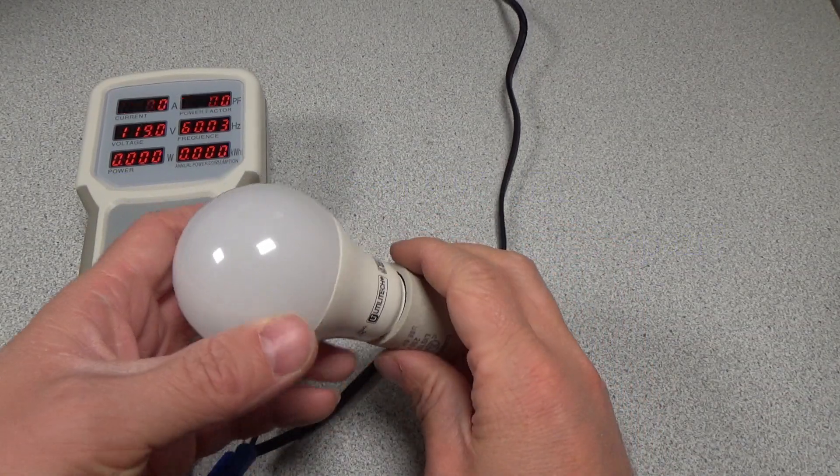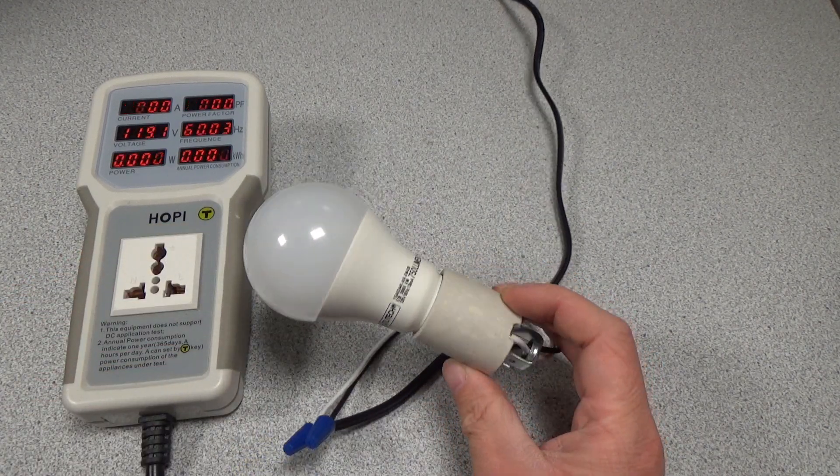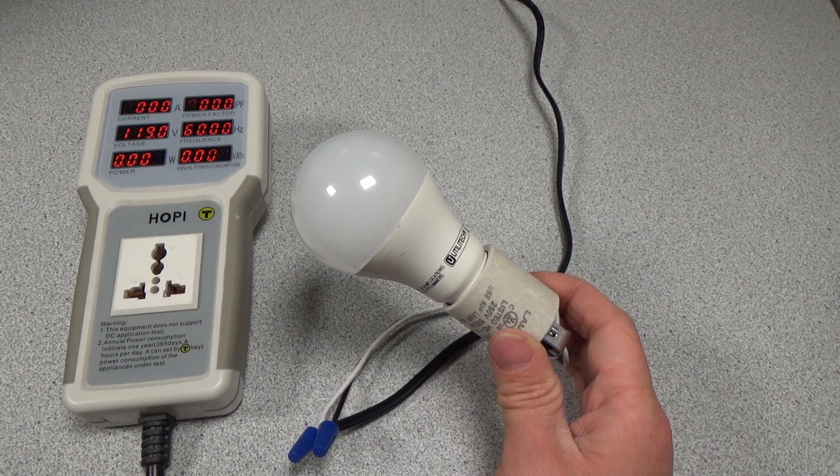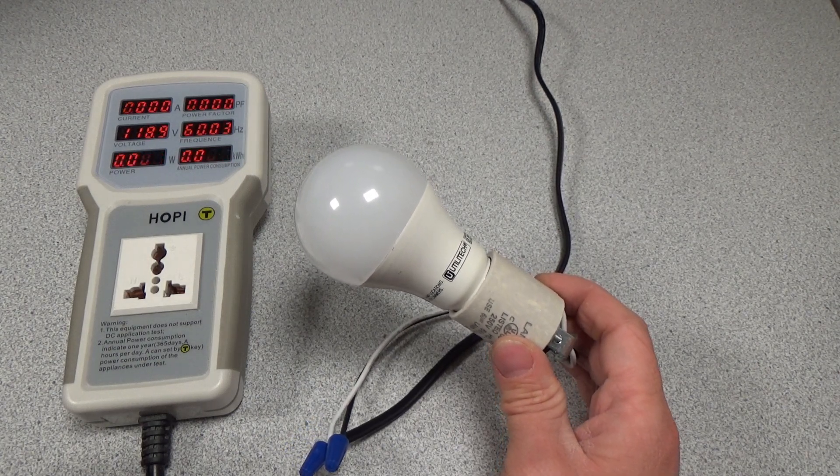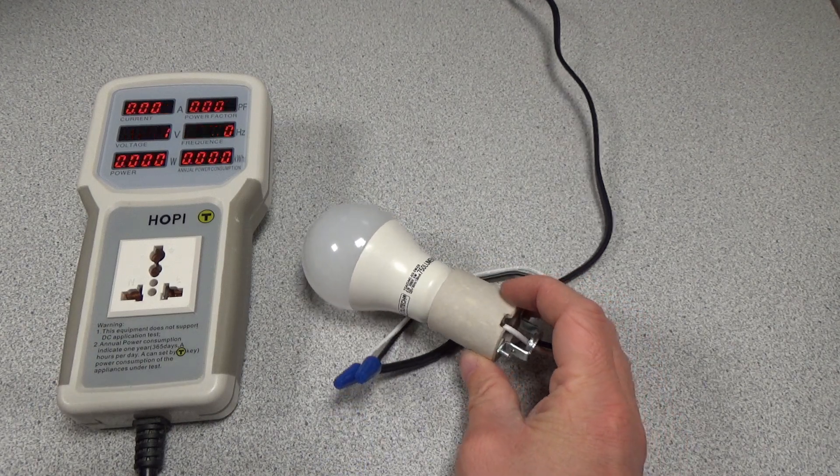Right here we have an LED light bulb that burnt out while installed in the garage door opener at my house. We're going to plug it in and see what happens, see if we get any power drawn, and then we're going to tear it apart and do a little autopsy and see what's inside this thing.